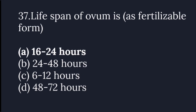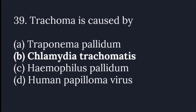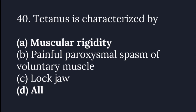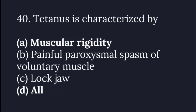The lifespan of an ovum in fertilizable form is 16 to 24 hours. The lifespan of sperm in fertilizable form is 48 to 72 hours. Trachoma is caused by Chlamydia trachomatis. Tetanus is characterized by muscular rigidity. Trismus (lockjaw), risus sardonicus, and opisthotonos are features of tetanus.